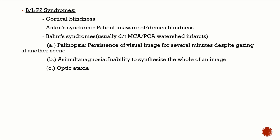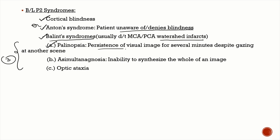Bilateral P2 syndromes are rare. Cortical blindness with Anton syndrome occurs — the patient is actually blind but denies or is unaware of their blindness. Balint syndrome occurs in MCA-PCA watershed infarcts and has three components: palinopsia, where a visual image persists for minutes despite gazing at another scene; simultanagnosia, where the patient cannot synthesize the whole of an image; and optic ataxia.